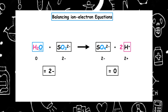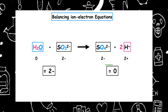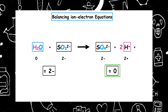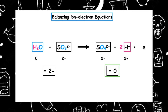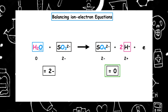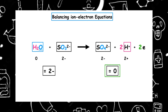Which number is higher — two minus or zero? Zero is the highest side, so this is the side we're going to add the electrons to. We have to balance out the overall charge: how many electrons do I need to add for zero to get to negative two? We're going to have to add two. And this is the overall balanced ion-electron equation.